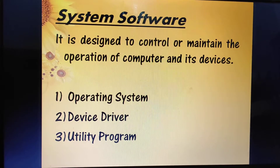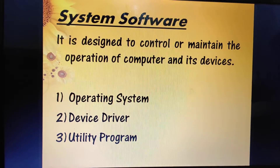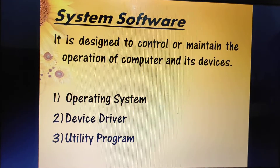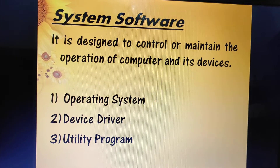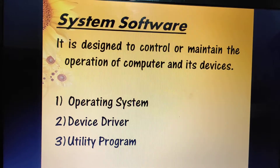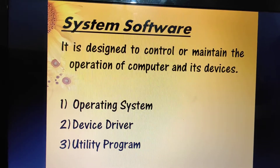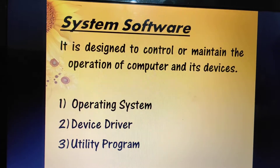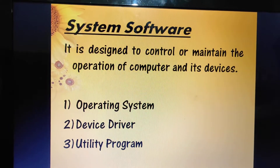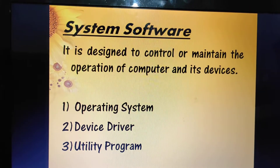The next function performed by the operating system is that it lets you give commands to the system — for example, to delete a document or move a file from one folder to another. You also use the operating system to tell the computer to run an application software. In short, the operating system acts as an interface or link between the user and the computer hardware.